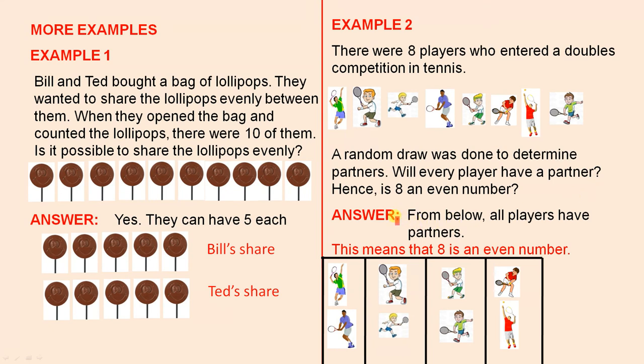Okay, so here's the answer. From below, all players have partners. In other words, those two can play together. Those two can play together. Those two can be a team. And those two can be a team. All together we have eight players. No players left over.